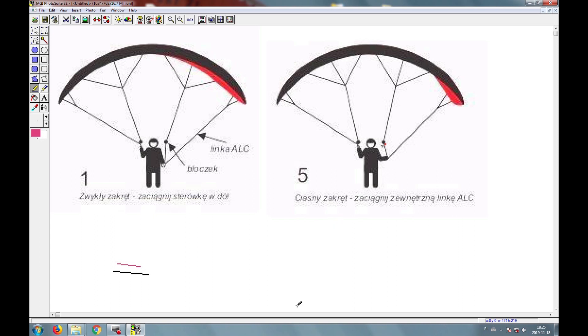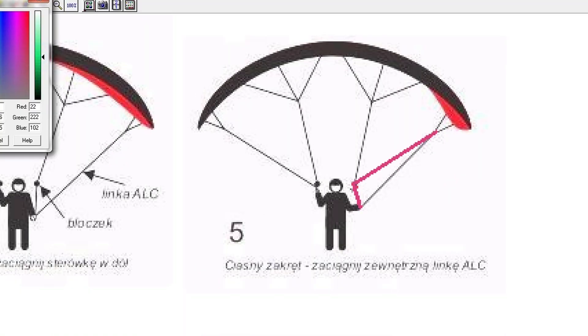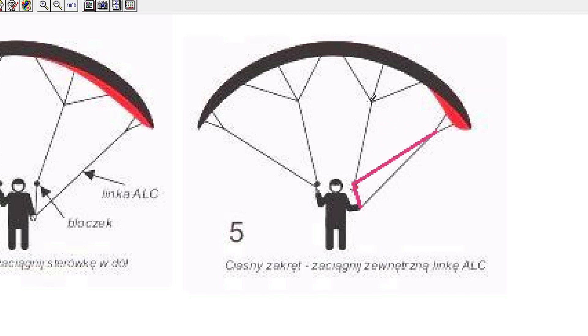If we want the system to work, we have to change. That means the stabilo lines go through the pulley to the handle, and the trailing edge, the steering line goes straight to the handle without the pulley. In this situation, there is a possibility to pull the stabilo without pulling the trailing edge. But you will never find this sort of lining in any paraglider.